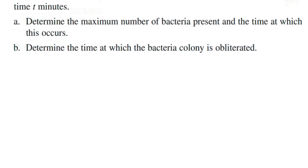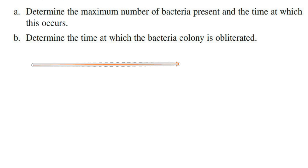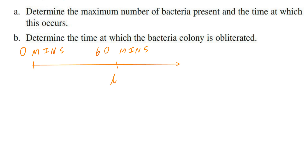Step number 1: draw a number line or a timeline. If you draw a straight line, the first thing you should think about is the time in terms of the beginning and the time when the drug was introduced. So here I'm going to write down 0 minutes, and here 60 minutes. The 60 minutes refers to time equal to 0 and this is the introduction of the drug.